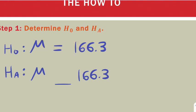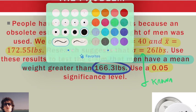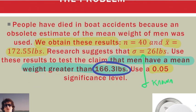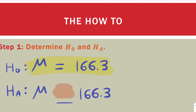Now at this point, we've written out our null hypothesis. Remember, the null hypothesis is saying what's the status quo. And that means that we're assuming that the average weight of a man is 166.3. Remember they talked about an obsolete estimate of the mean weight of men? I'm guessing that's where they got this 166.3 number.